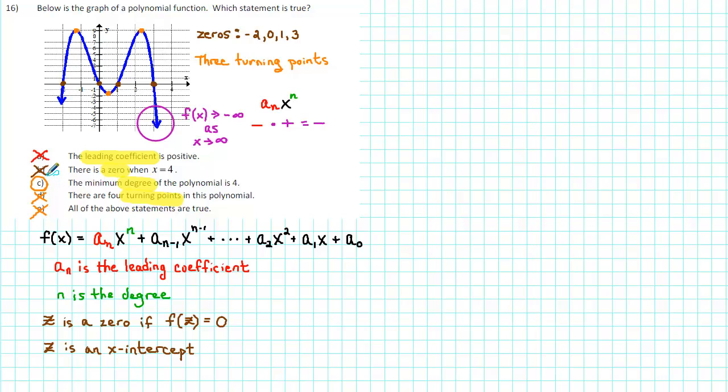But why is that? Well, recall that the number of turning points is less than or equal to one less than the degree. Well, let's add one to both sides and see what that tells us about the degree.